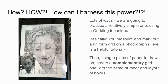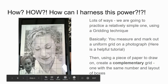You might be asking how you can harness this power. There are a lot of ways — we're going to practice a relatively simple one, which is using a gridding technique. Basically, you're going to measure and mark out a uniform grid on a photograph. I have a helpful tutorial for how to measure and mark out these grids — actually two tutorials, one using a ruler and one making do without, because during distance learning sometimes we don't have all the tools we need. On this example, we see seven boxes going across and ten boxes going down, with the same number on the photograph.